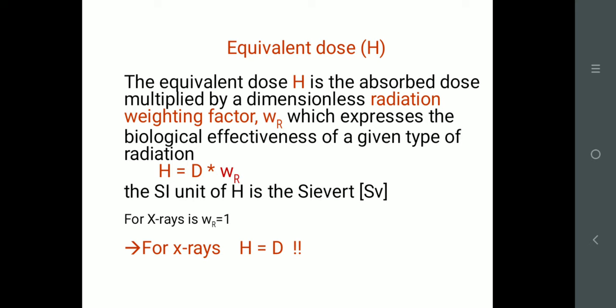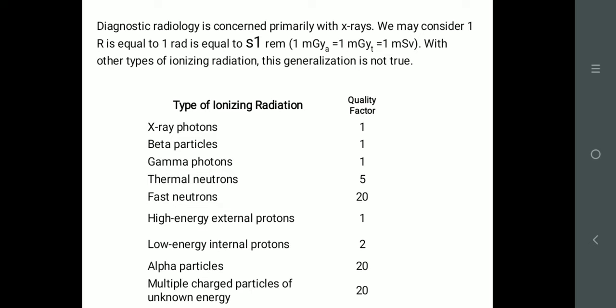Linear Energy Transfer (LET) gives information about how much absorbed dose is in 1 cm of tissue in the body. The equivalent dose tells you how many doses are in the body and how harmful they are based on the type of radiation. The radiation weighting factors: X-ray photon = 1, beta = 1, gamma = 1, thermal neutrons = 5, fast neutrons high energy and low energy. The unit is Sievert and the old unit is Rem — Roentgen Equivalent Man.